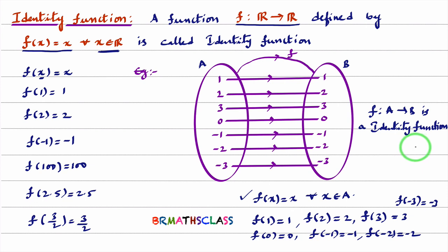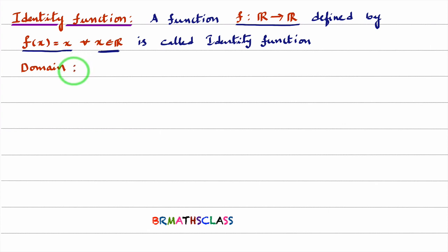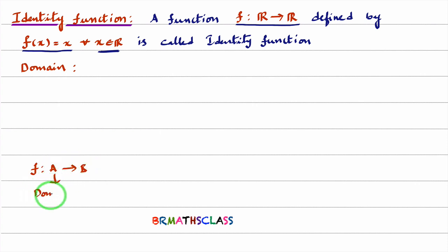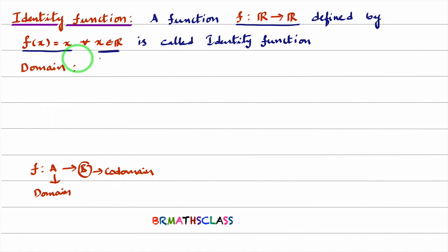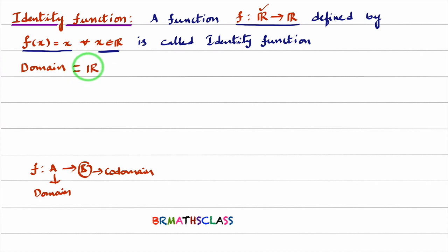Now we will learn what is the domain, co-domain, and range of an identity function. We know that if f is a function from set A to set B, then set A is called the domain. This function is from the set of all real numbers to real numbers, so the domain of the identity function is the set of all real numbers.